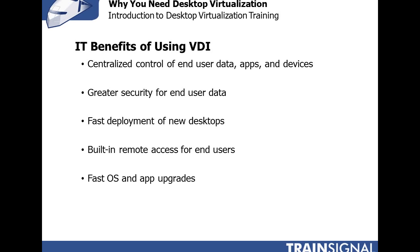With VDI, you'll get built-in remote access for end users — no more VPN and copying large files back and forth over a slow WAN or internet link. VDI gives built-in access to the same desktop they use at the office, no matter where they go. You'll also gain fast operating system and application upgrades. With VDI, you can use application virtualization and deploy those virtualized apps to your virtual desktop images in the data center — it'll be as simple as copying files and having end users test new applications side by side.